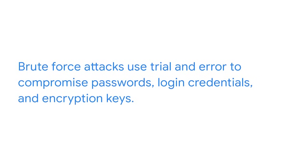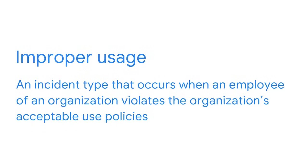Earlier in the program we discussed brute force attacks, which use trial and error to compromise passwords, login credentials, and encryption keys. These attacks are often used to help attackers gain unauthorized access to an organization's systems or applications. All unauthorized access incidents are important to escalate. However, the urgency of that escalation depends on how critical that system is to the organization's business operations. The third incident type is improper usage — when an employee violates the organization's acceptable use policies. There are instances when improper usage is unintentional; for example, an employee may attempt to access software licenses for personal use.